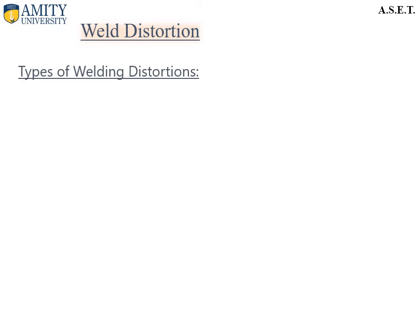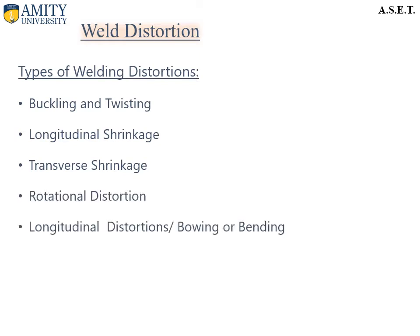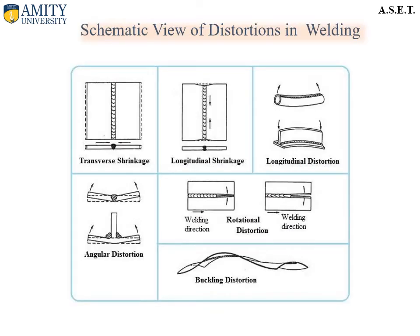Now let us discuss the various types of welding distortions: buckling and twisting, longitudinal shrinkage causing distortions, distortions due to transverse shrinkage, rotational distortions, longitudinal distortions also known as bowing and bending, and angular distortion. On screen we can see a schematic view of these distortions under various conditions.